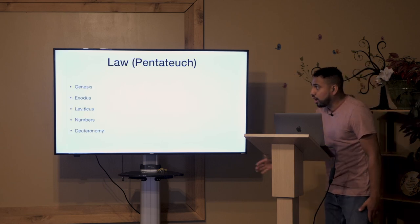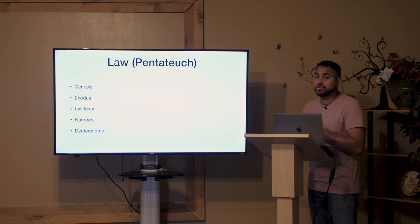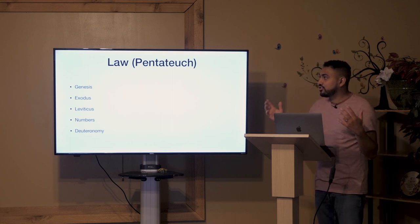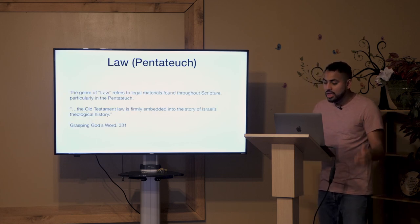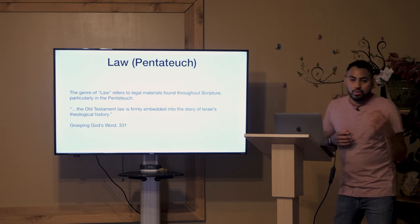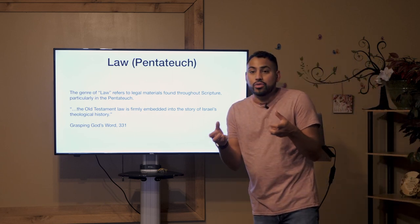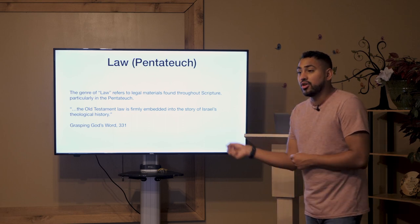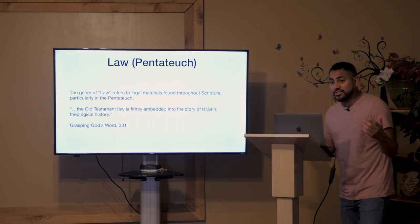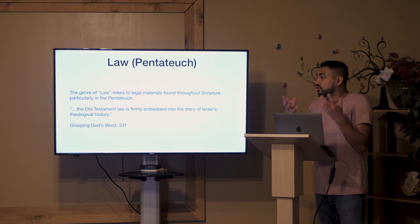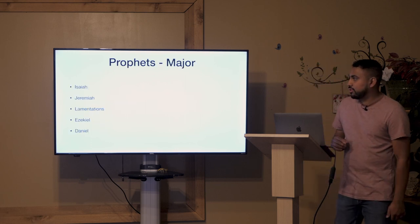The Law, which is the Pentateuch — Genesis, Exodus, Leviticus, Numbers, and Deuteronomy — these are the first five books of the Bible. Law refers to legal materials found throughout Scripture. You're going to read them and think, 'Man, this is a lot of laws, what does this have to do?' There's meaning and reason behind those things, and we'll get into that when we study the books of the law.